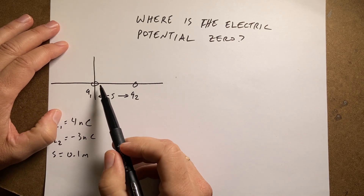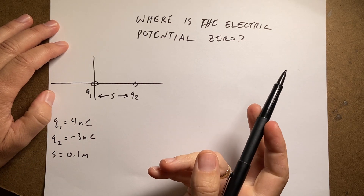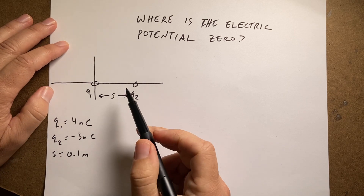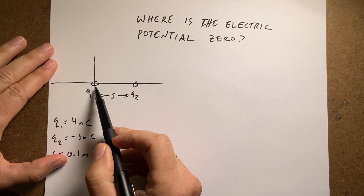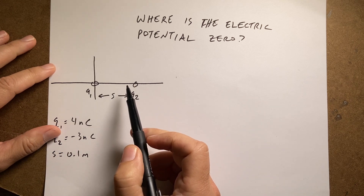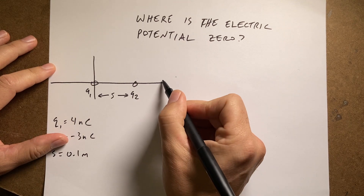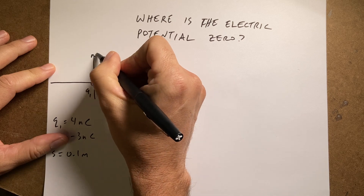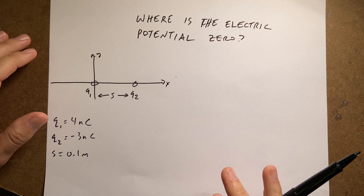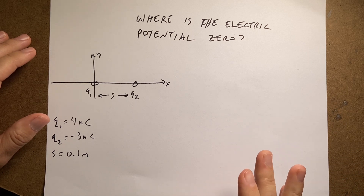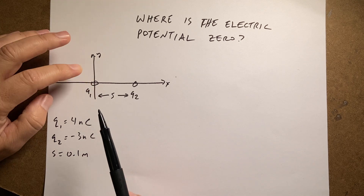Here I have two point charges — the same two point charges from my previous video in which I calculated the electric potential. The question is: if I have charge q1 and charge q2, where q2 is negative, and they're separated by distance s, where is the electric potential equal to zero? Specifically, where on the x-axis is the electric potential equal to zero? The charges are four nanocoulombs and negative three nanocoulombs, separated by distance s.